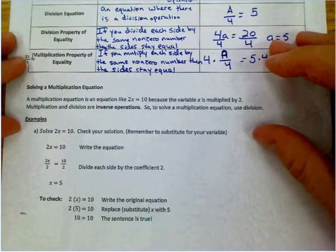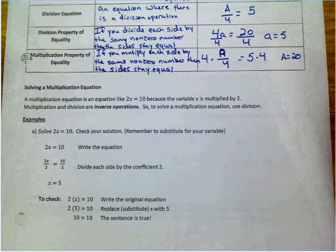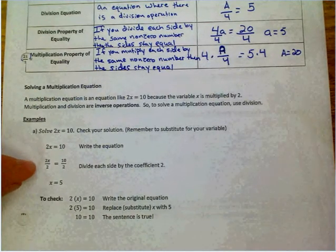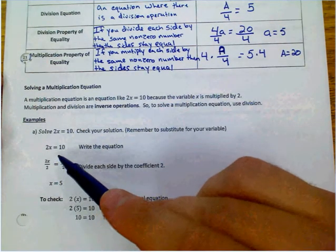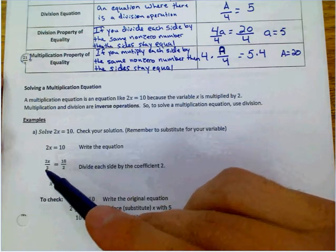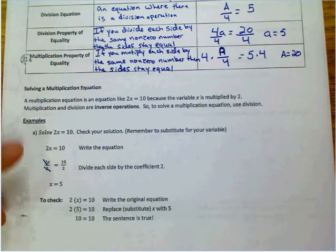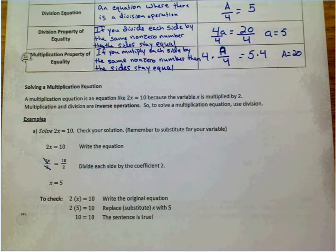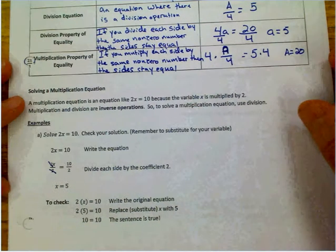When we solve a multiplication equation, we use our inverse operation. So, the inverse operation of multiplication is division. So, we're going to divide each side by the coefficient. So, if we have 2x equals 10, we're going to rewrite the equation there, then we're going to divide by that coefficient. That will cancel out our 2, our coefficient on that side, and then we have 10 divided by 2 equals 5. In order to check it, we substitute 5 back in within our equation to determine whether or not it's true.